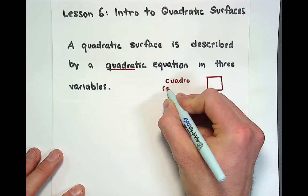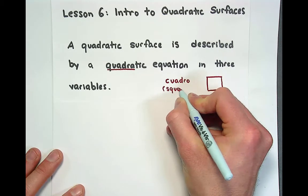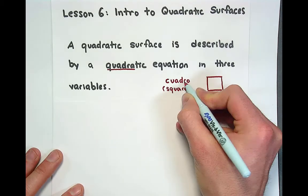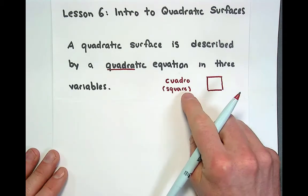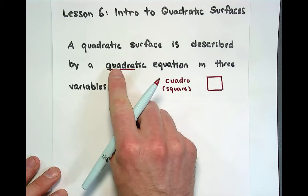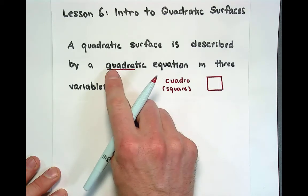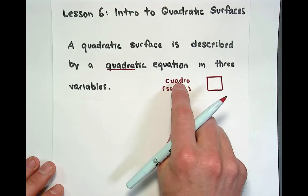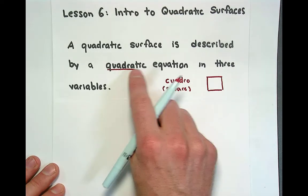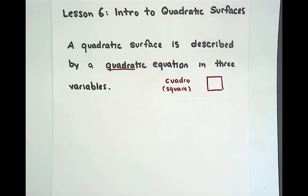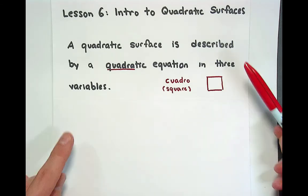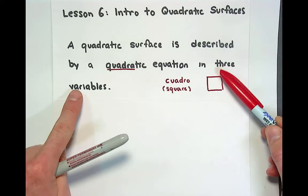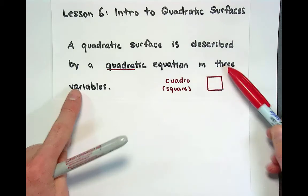Yeah it's a square. So when we think about the word cuadro in Spanish we think about the word square and I would imagine, I'm not a linguist, but I would imagine the quadratic root word is similar to the word cuadro. So when we're thinking about quadratic equation you could think about an equation that involves squares, some square power. Quadratic surfaces are described by quadratic equations having squares that have three variables.